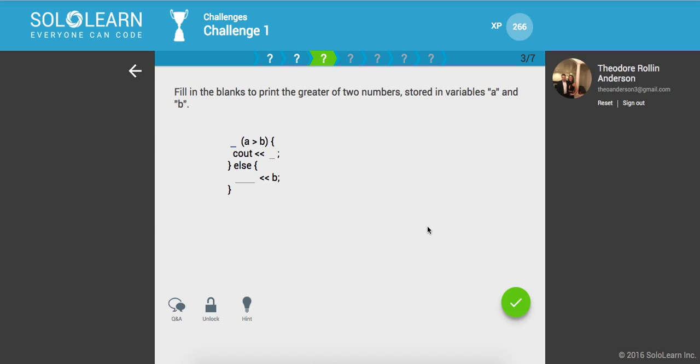Fill in the blanks to print the greater of two numbers stored in variables a and b. So we're going to say, if a is greater than b, then print out a, otherwise, print out b.